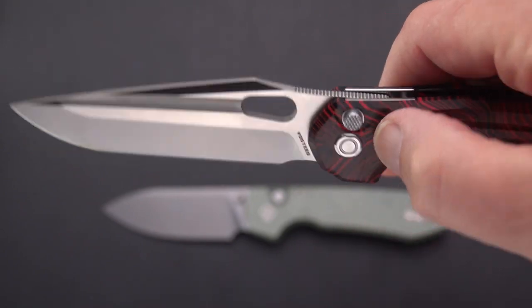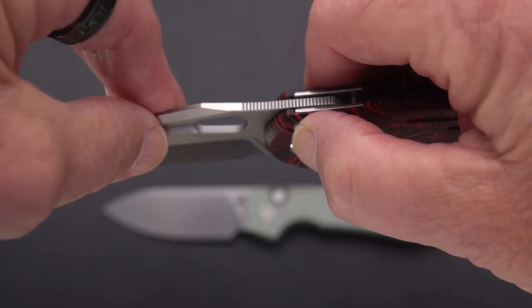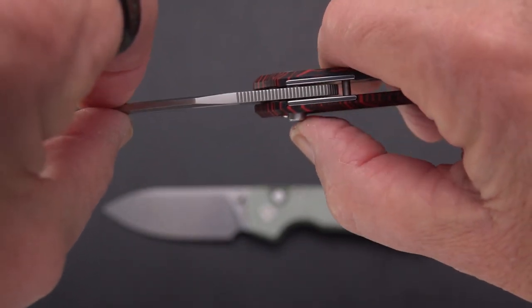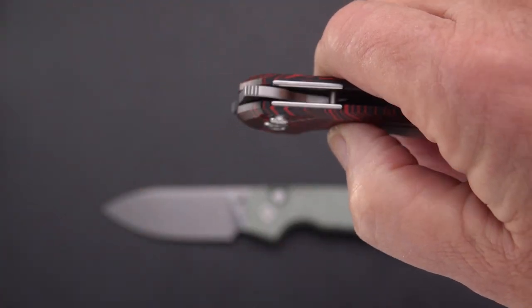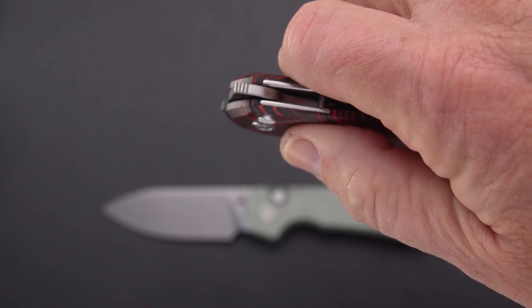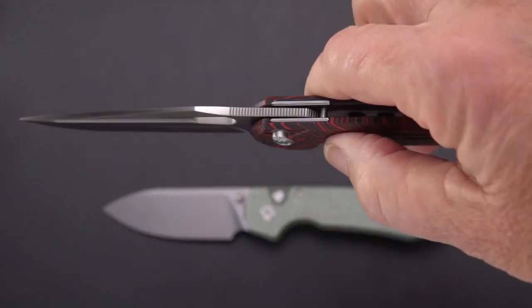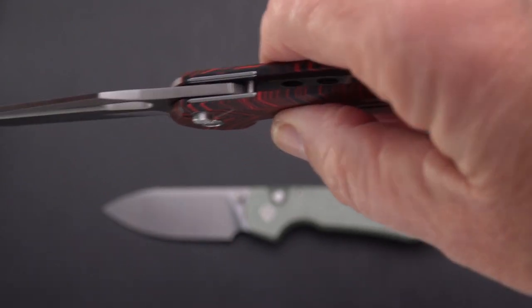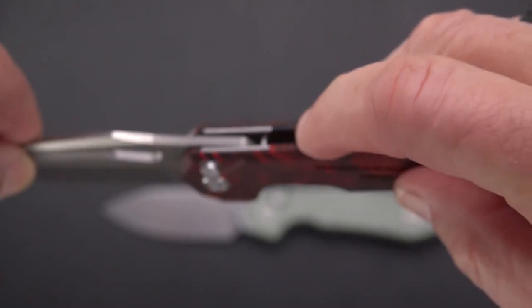We've got a plunge lock going through the blade, I'm guessing, at some point. When the knife is closed, that lock is further in than when the knife is open.